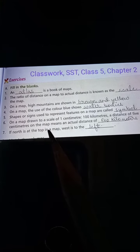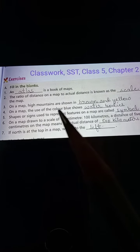Number seven: If north is at the top in the map, west is to the left. If on a map the top direction is north, then west is on the left side.